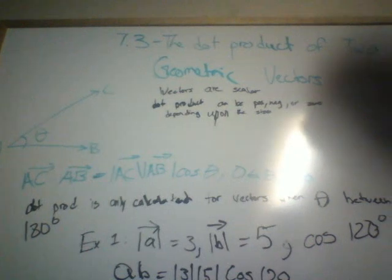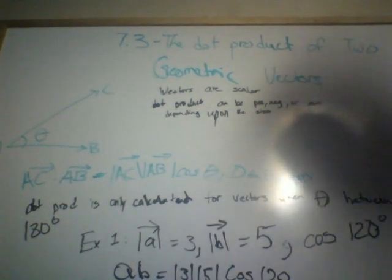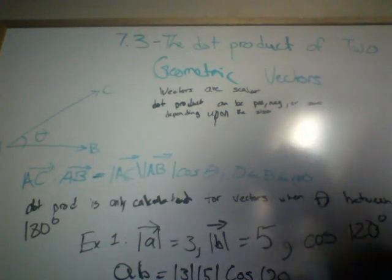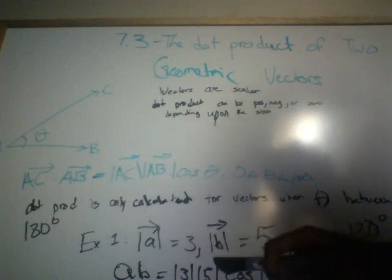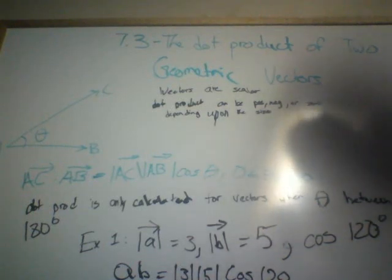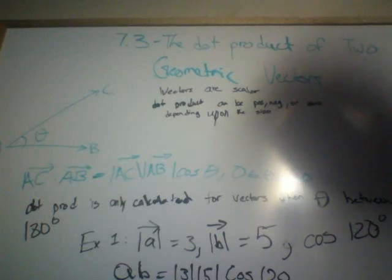For example 1, the magnitude of A equals 3, the magnitude of B equals 5, and theta equals 120 degrees. We sub in these values: A times B equals 3 times 5 times cos 120 degrees, which gives us a value of negative 7.5.